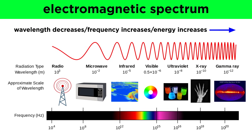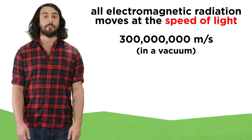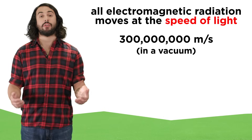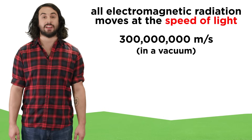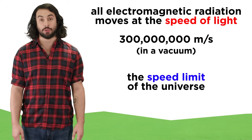Even though they seem dramatically different, some requiring things like antennas or other equipment to manipulate, all of them are fundamentally the same thing as the light you can see with your eyeballs — they are just of different wavelengths. All electromagnetic radiation moves at the speed of light, which is about 300 million meters per second in a vacuum, the fastest speed possible in the universe.